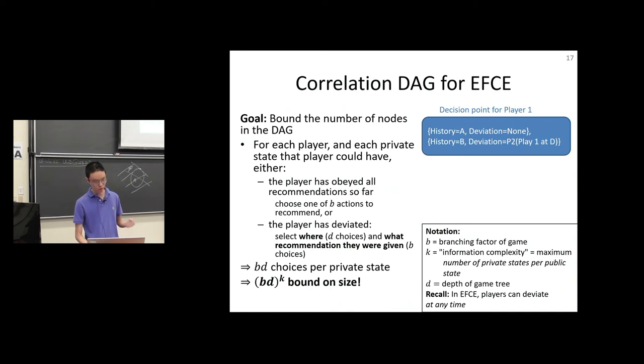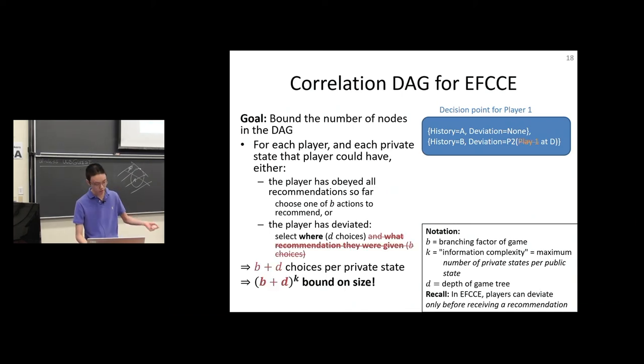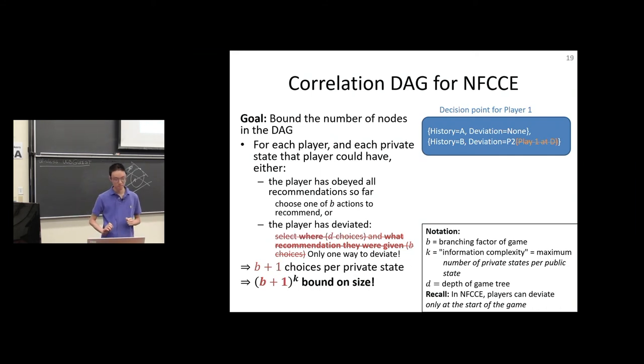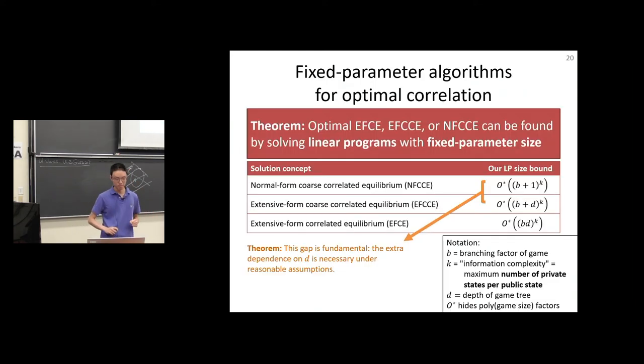For extensive form coarse correlated equilibrium, we can do slightly better. Because the player is not going to receive a recommendation when they deviate, we don't need to select where and when. We only need to select where. Instead of B times D, we get B plus D. In normal form coarse correlated equilibrium, the player doesn't receive any recommendations at all when they deviate. So we just get B plus 1. Either the player has deviated or we recommend one of the B actions. That's where all three of these size bounds come from.